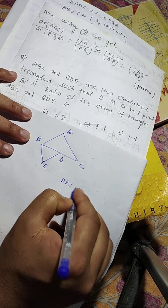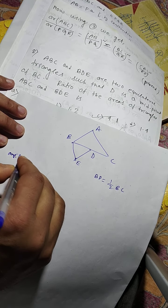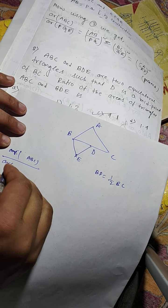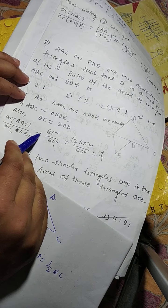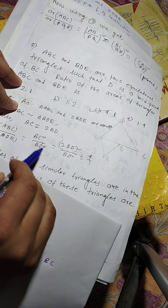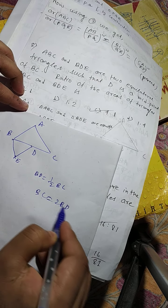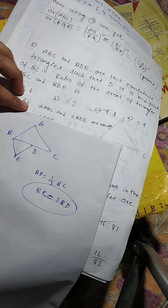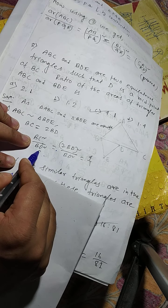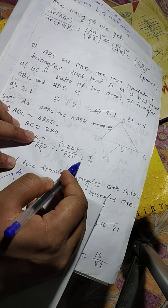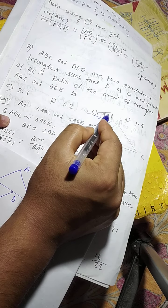Since D is the midpoint of BC, BD equals half of BC, meaning BC equals 2 times BD. By the previous theorem, area of ABC by area of BDE equals BC squared by BD squared. Replacing BC with 2 times BD: that gives 2BD whole square by BD squared, which equals 4 BD squared by BD squared. The BD squared terms cancel, giving 4 by 1. So the answer is 4 to 1, which means option C is correct.